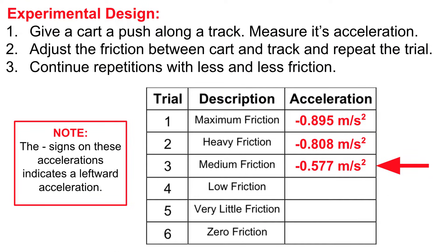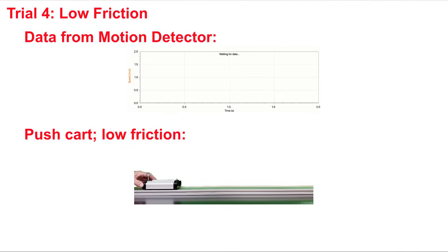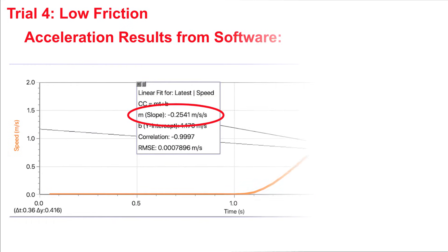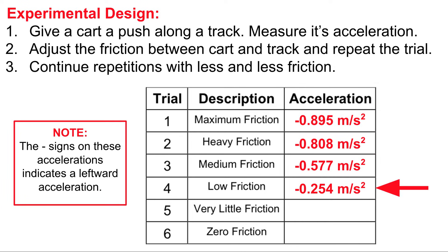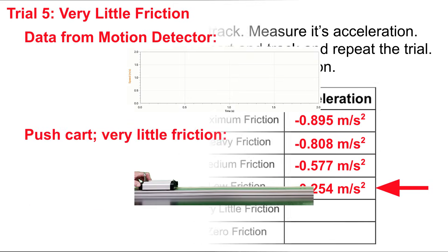And then we'll try a low friction trial. Here it goes. With our low friction trial, we notice the acceleration is getting less and less. It's negative 0.254. We'll enter that into the table and conduct a trial with very little friction.